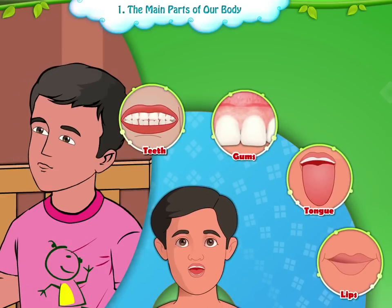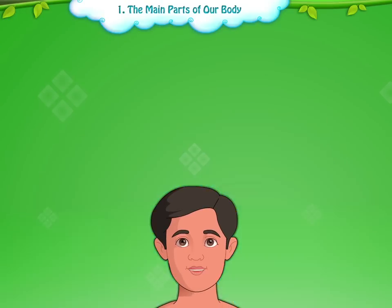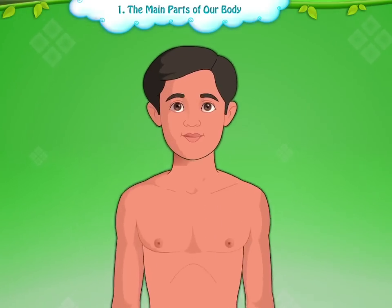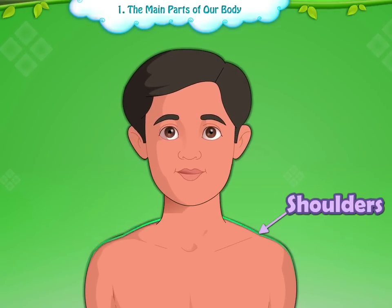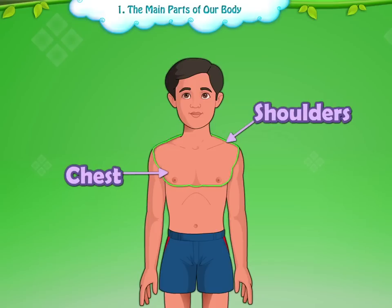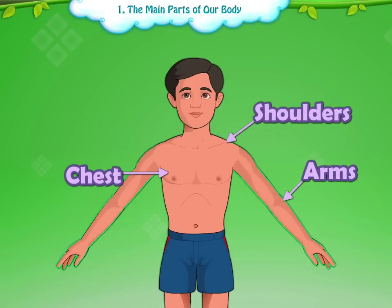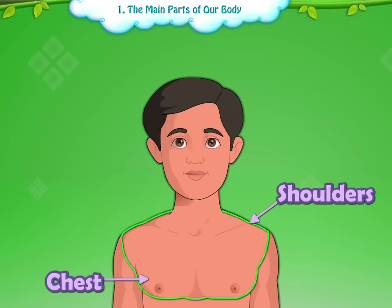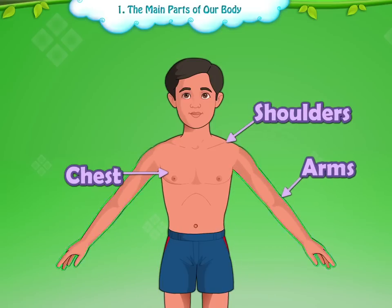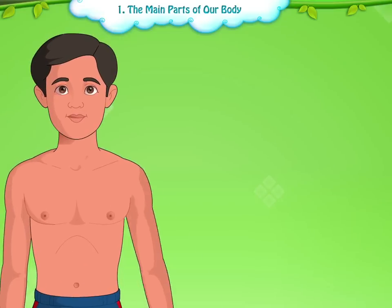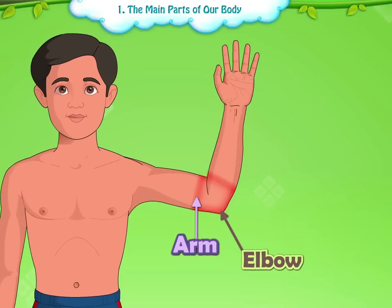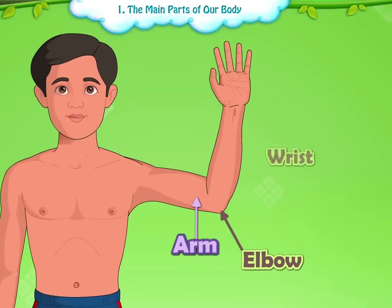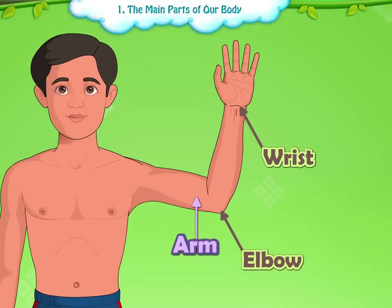We chew food with our teeth. Now look at the shoulders, chest and arms. The chest is in the upper part of the body. The arms are joined to the shoulders.